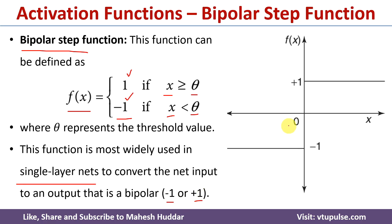This is how we can show the bipolar step activation function. If the value of x is greater than or equal to the threshold value, it will be plus 1. If it is less than the threshold value, the output will be equal to minus 1.